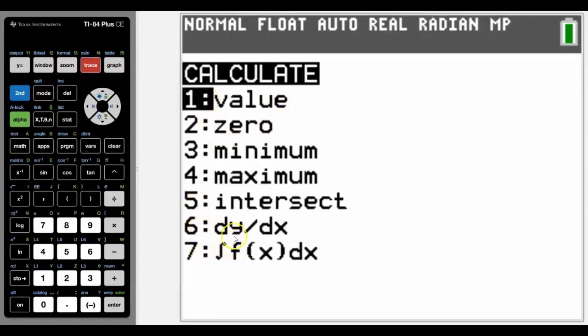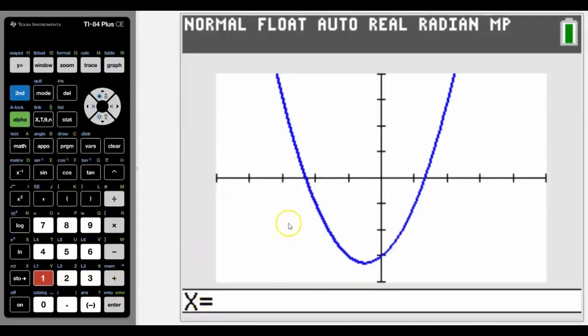6 and 7 are the calculus parts of the calculate options which really you do in year 11 and 12, derivative and integral, but we're going to focus on 1 to 5.